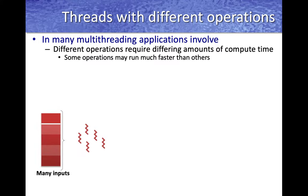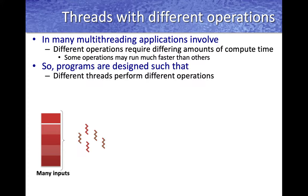If you have many inputs that need to be processed, different inputs could require different amounts of time because they might require different kinds of processing. Programs are typically designed such that different threads perform different operations, and based on the input, you might have different threads performing different operations.